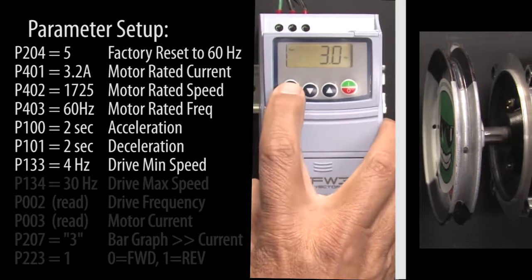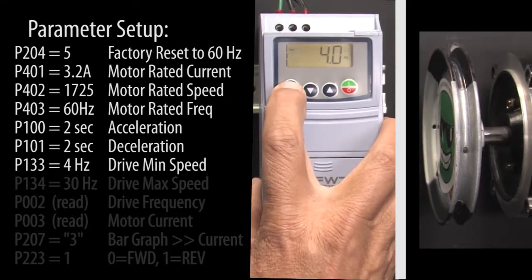Scroll to the min speed parameter, let's make that 4 Hz. Hit P to accept that.